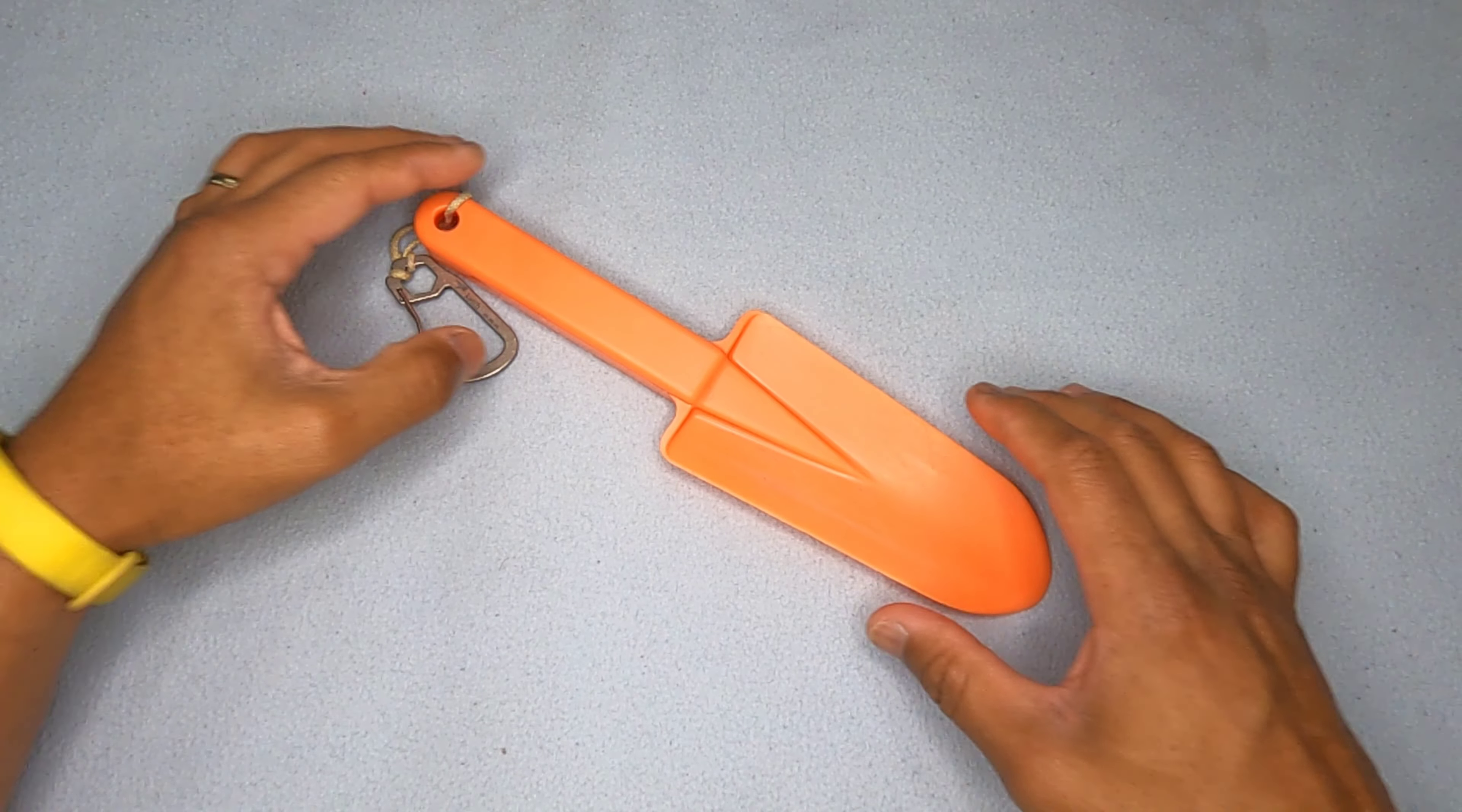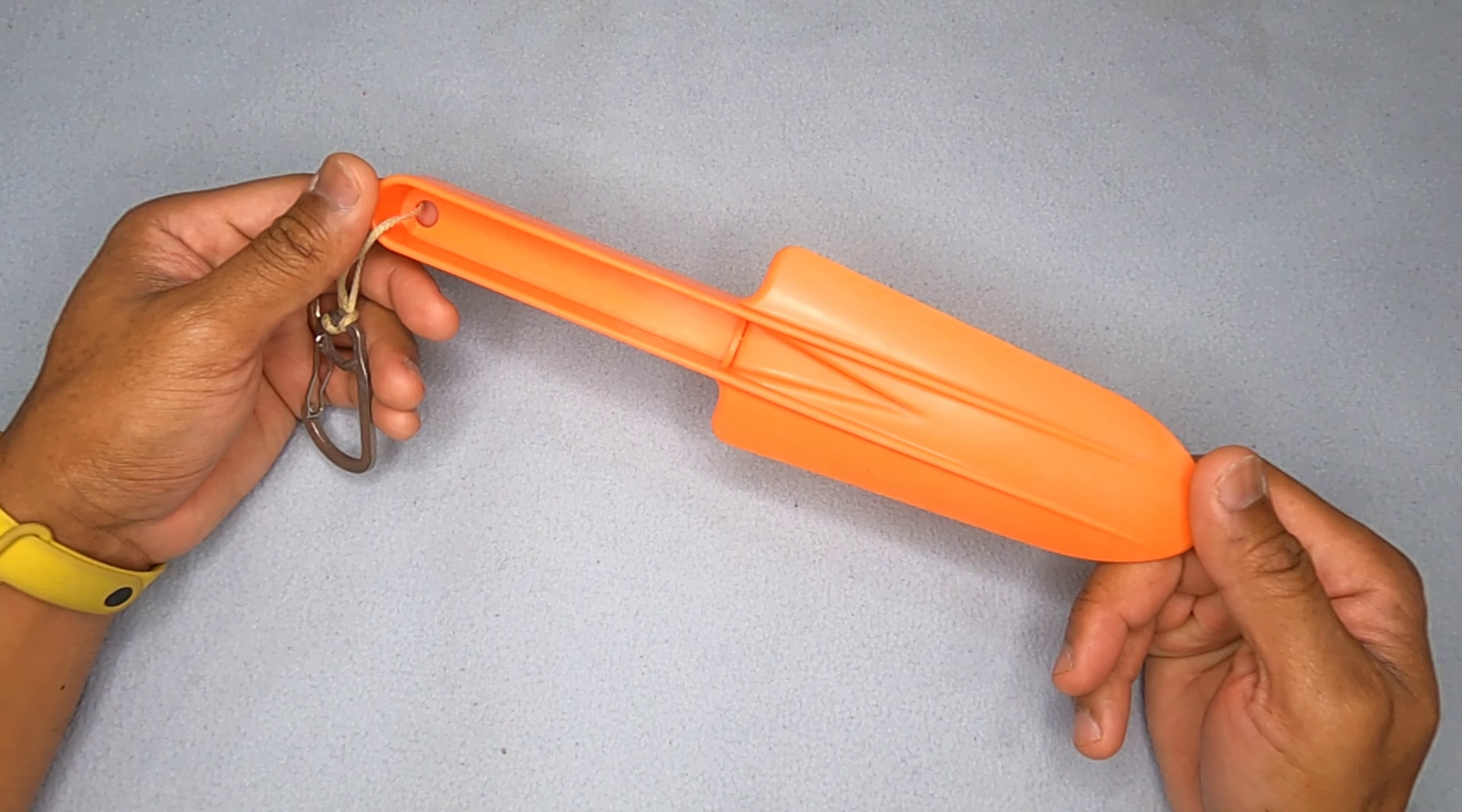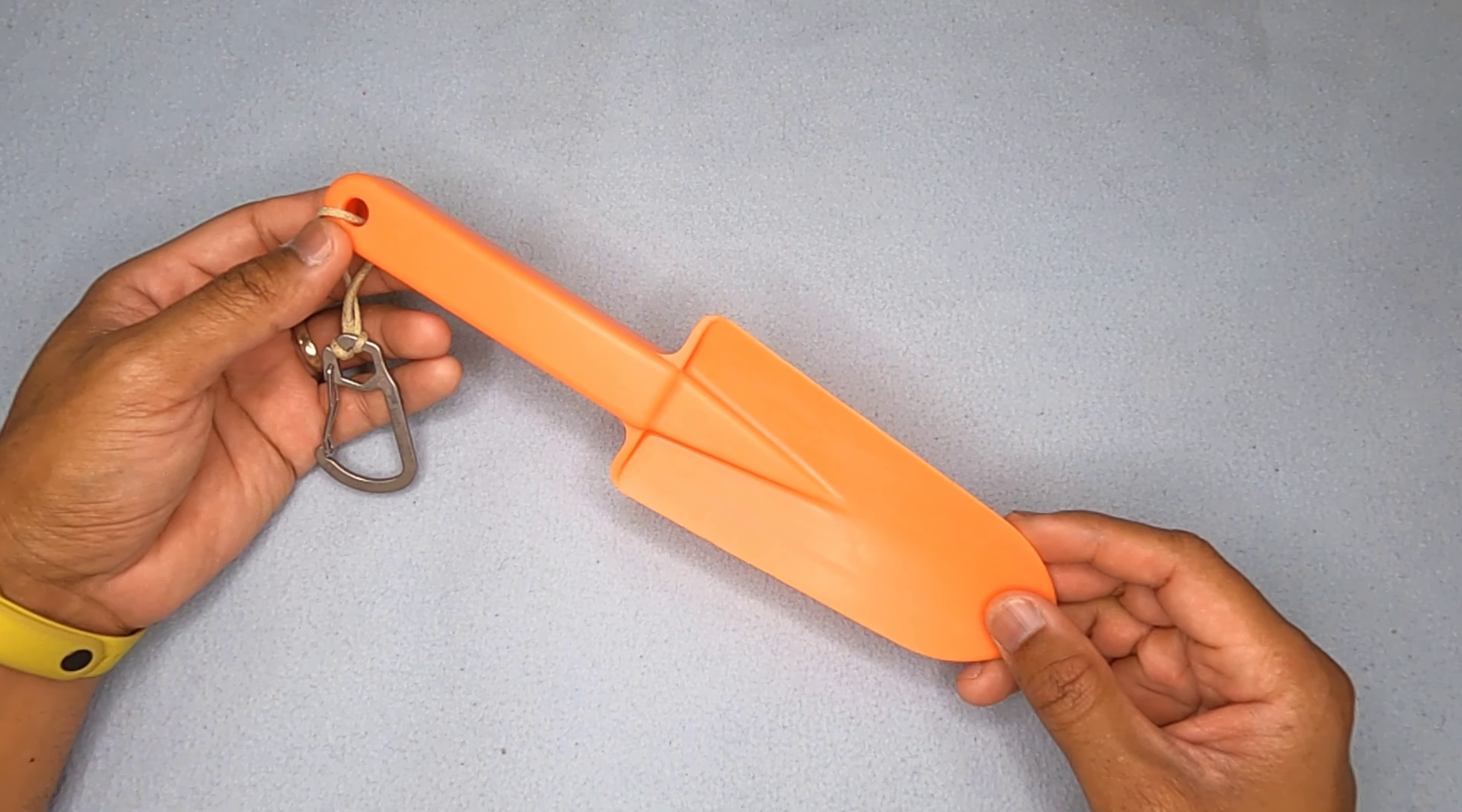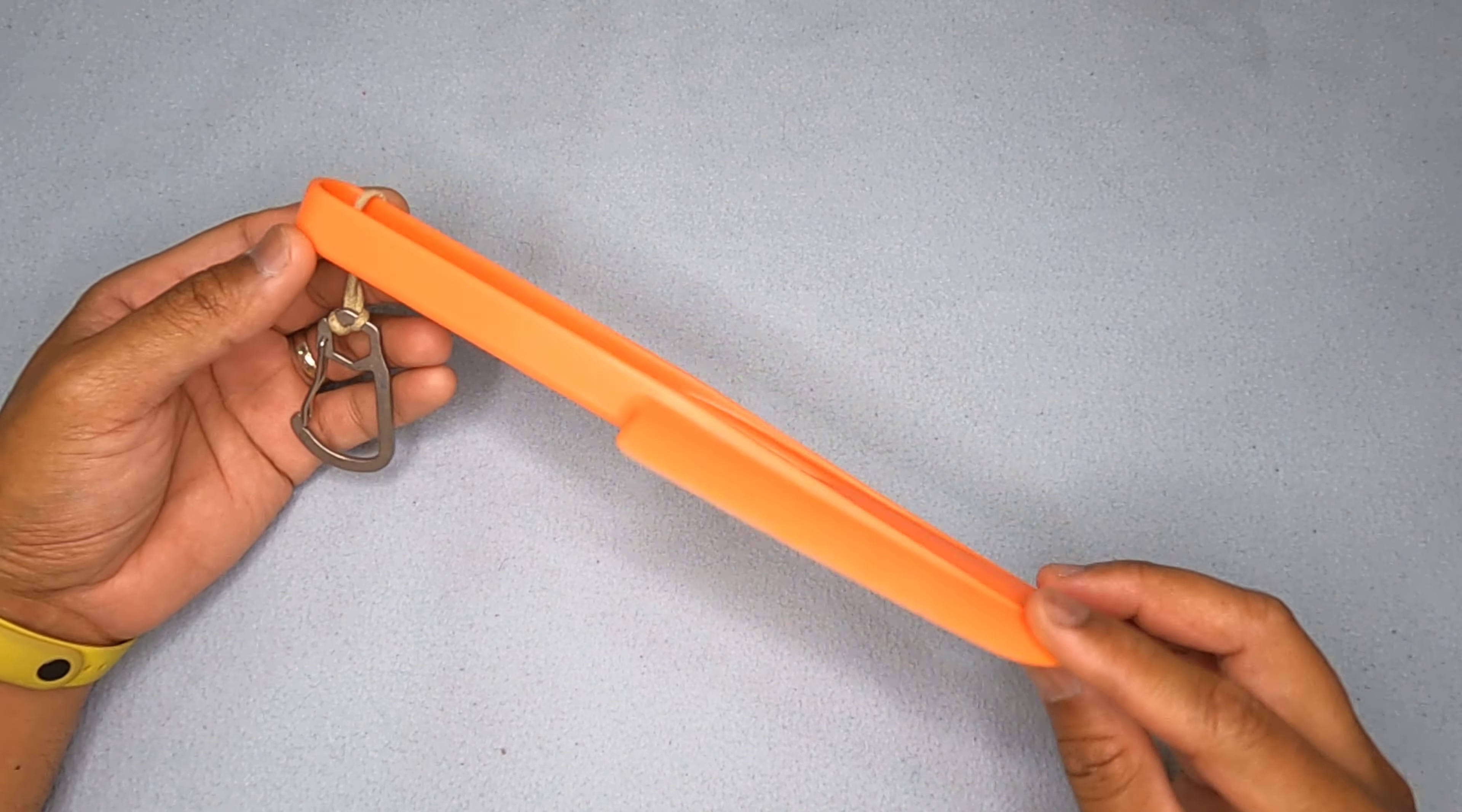Hey guys, so today we'll be looking at the legendary Coghlans 8408 camp trowel. This was my first camp trowel that I ever got. It's probably at least eight years old, probably older, and it was really cheap and still is really cheap. That's one of its main selling points.